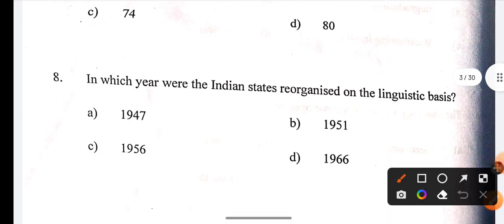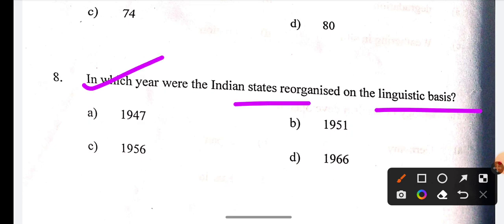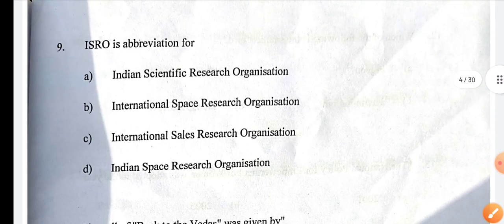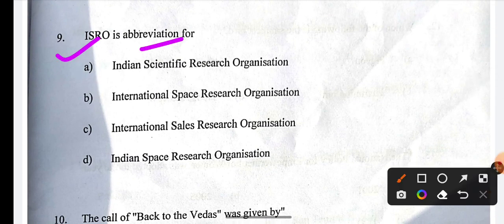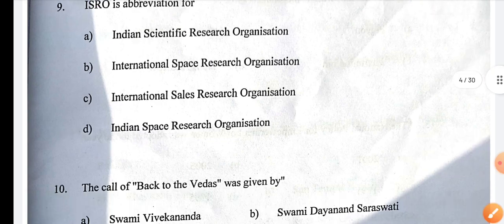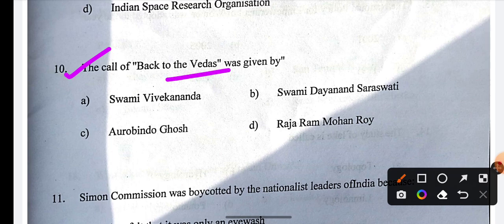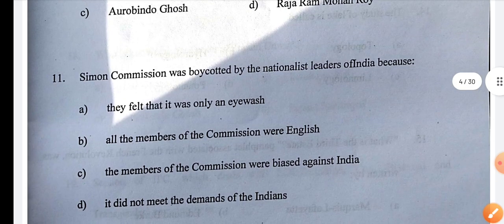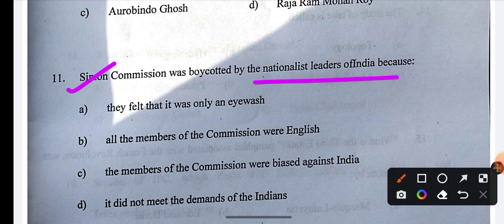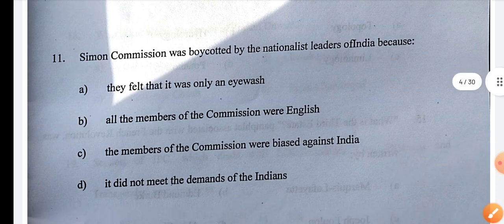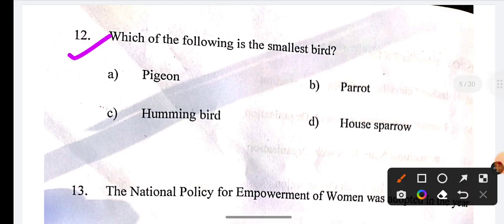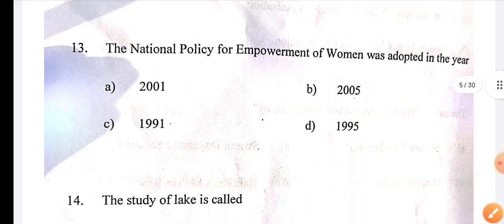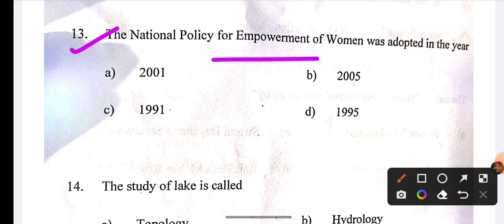Next question: The call of Back to the Vedas was given by? The correct answer is B, Swami Dayanand Saraswati. Question 10. Next, the answer is Hummingbird. The National Policy for the empowerment of women was adopted in the year? The correct answer is 2001.